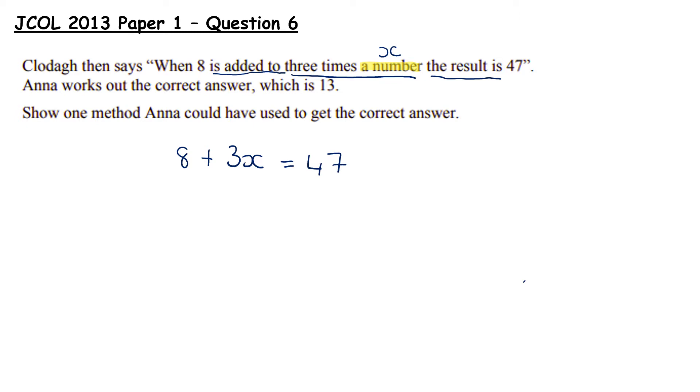Now we're going to solve this like you would solve any linear equation. We will use a bit of vertical balancing. Take away an 8 from both sides. That leaves us with 3x equals 39. Divide both sides by 3 and we get x equals 13 which given the way this question was asked we know is the correct answer.